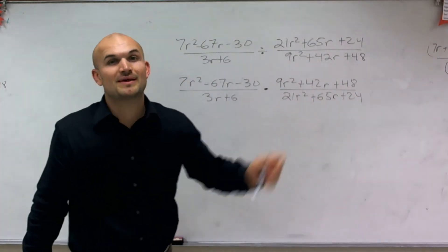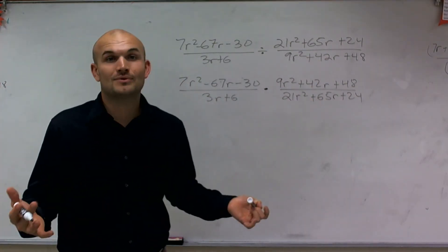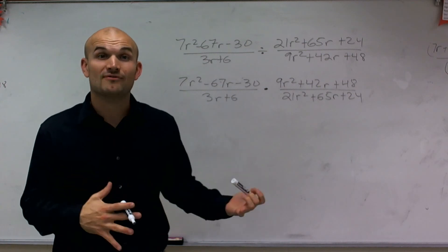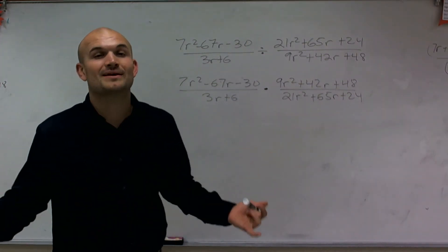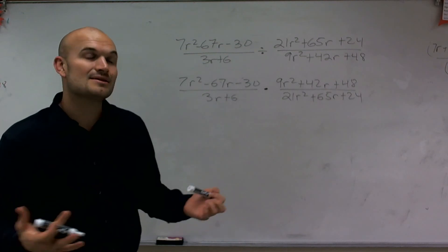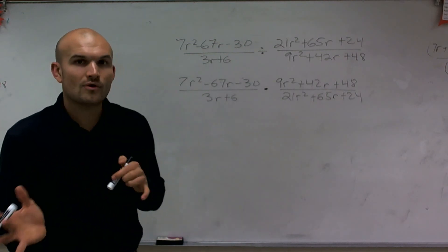However, that's a big trinomial times another trinomial. And then I can multiply this across by that. And remember, whenever we're looking at fractions, we always want to look to simplify something. Well, once I multiply that, I'm going to get some pretty big numbers and it might be a little difficult to simplify.